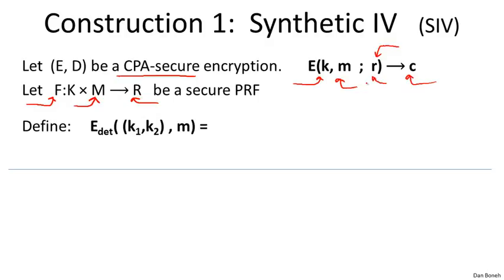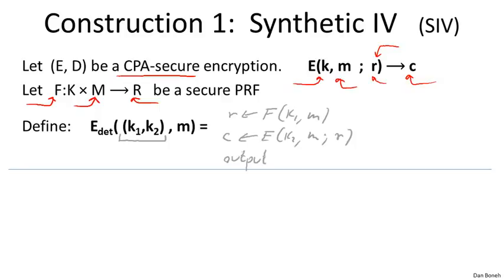The little r is a member of the big R set, and F is a pseudorandom function that maps messages to random strings. SIV uses two keys K1 and K2 to encrypt message M. First, it applies the pseudorandom function F to message M to derive randomness for the CPA secure encryption scheme E. Then it encrypts message M using that derived randomness, producing ciphertext C. So SIV first derives the randomness from the message being encrypted, then uses that derived randomness to actually encrypt the message and obtain the ciphertext.